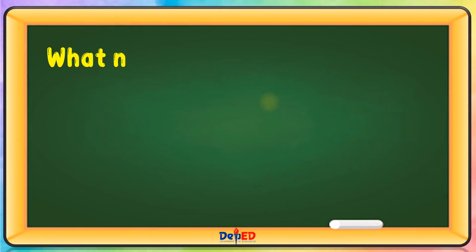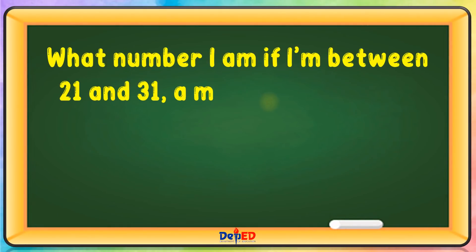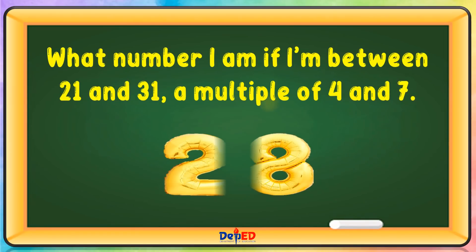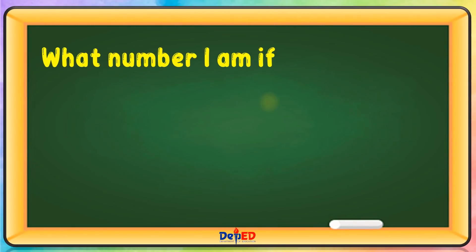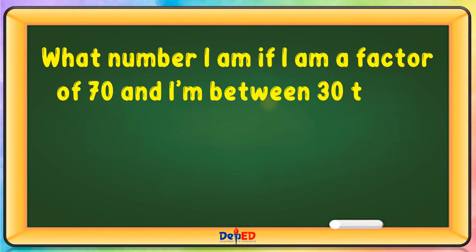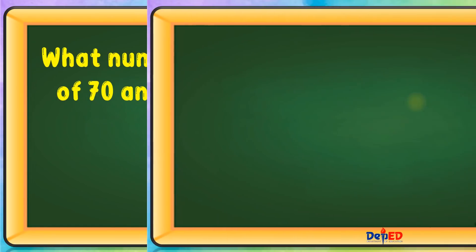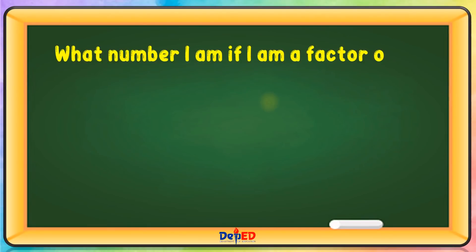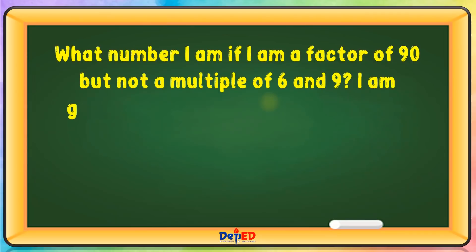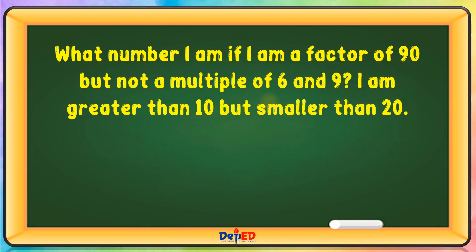What number am I if I'm between 21 and 31, a multiple of 4 and 7? The answer is 28. What number am I if I am a factor of 70 and between 30 to 40? The answer is 35. What number am I if I am a factor of 90 but not a multiple of 6 and 9? I am greater than 10 but smaller than 20. The answer is 15.